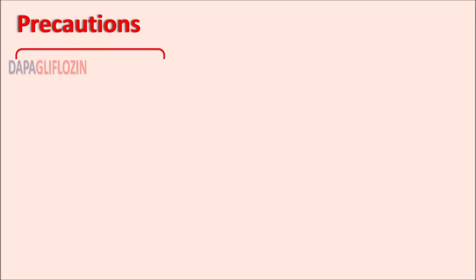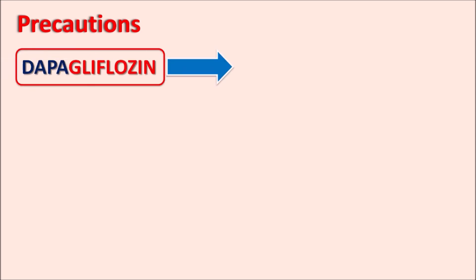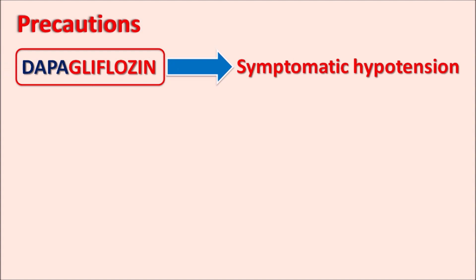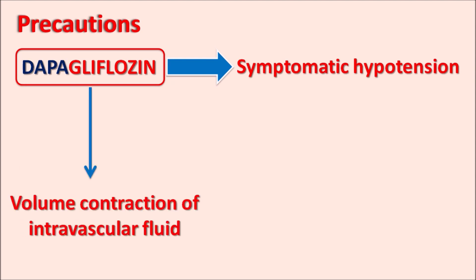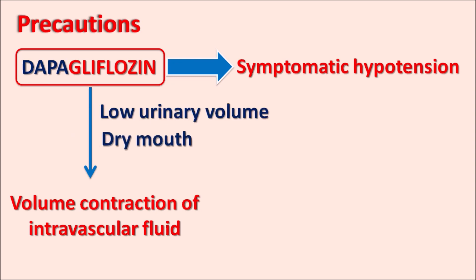One important precaution of Dapagliflozin is that it can produce symptomatic hypotension. This drug can cause volume contraction of intravascular fluid, leading to decreased blood pressure. Due to reduced body volume, there will be low urinary volume, dry conditions such as dry mouth, and an increased pulse rate. This can be further worsened by loop diuretics, which also produce hypotension and volume depletion.